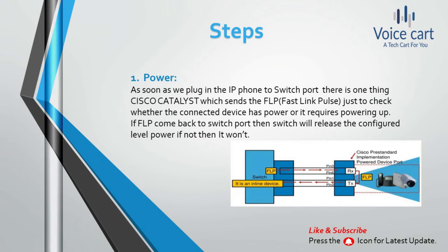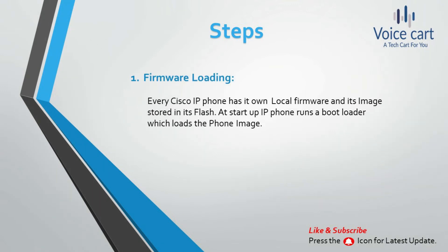The next step in the boot-up process is loading the firmware. Firmware is like an ISO already stored in the phone's flash memory. Every Cisco IP phone has its own local firmware image stored in its flash. On startup, the IP phone runs a boot uploader which loads the phone image. After getting power, the Cisco IP phone loads its firmware.